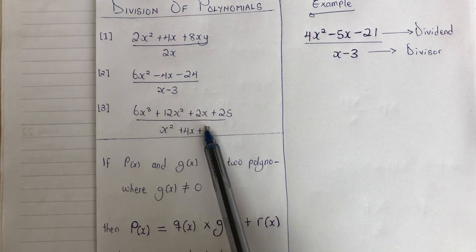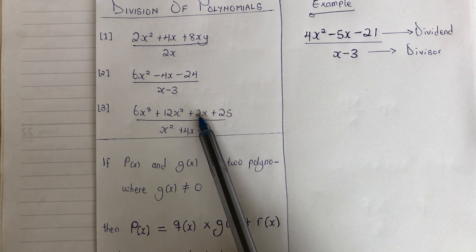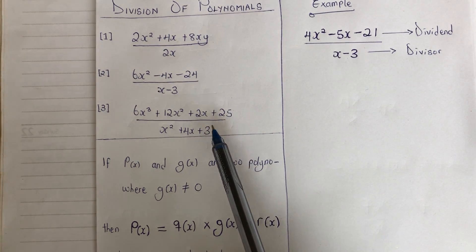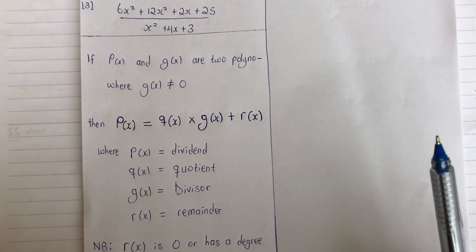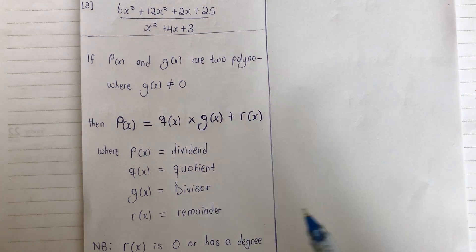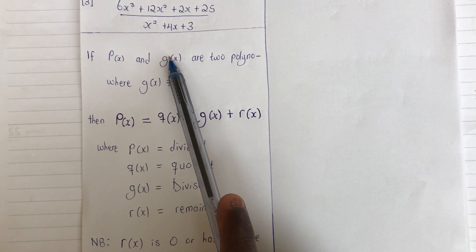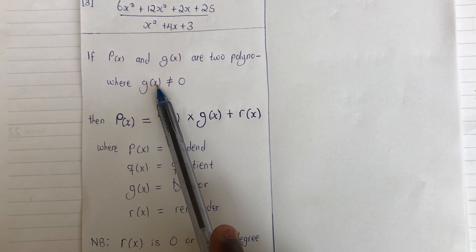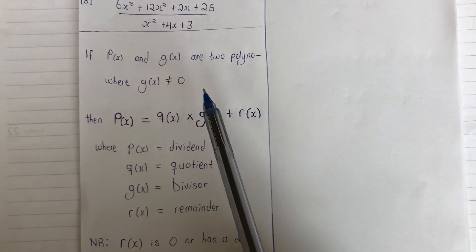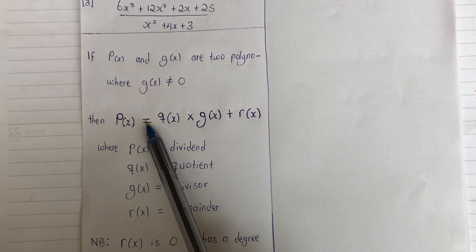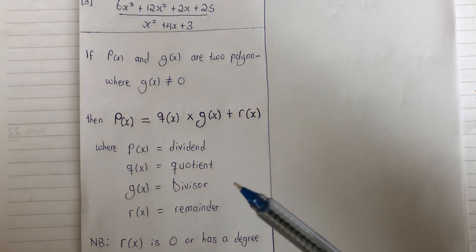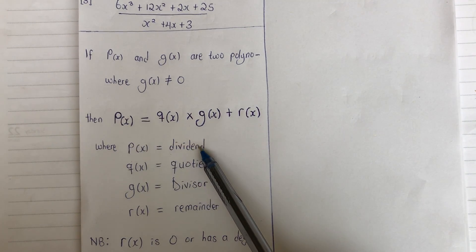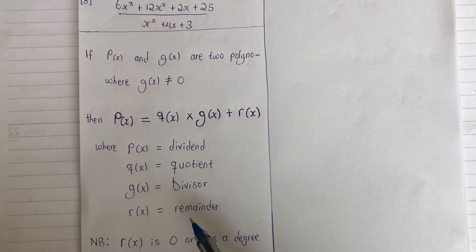I'll be talking about division of a polynomial by a binomial using the long division method. Note that the division algorithm for polynomials says that if we have two polynomials, p(x) and g(x), where g(x) is not equal to zero, then we can write: p(x) equals q(x) times g(x) plus r(x). Here p(x) is the dividend, q(x) is the quotient, g(x) is the divisor, and r(x) is the remainder. The remainder must be zero or have a degree less than g(x).